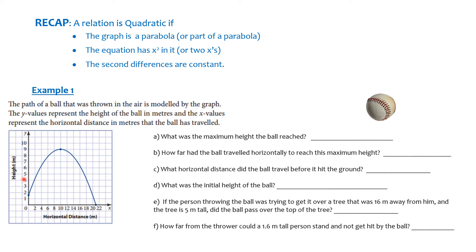What was the maximum height reached by the ball? That's the vertex. Maximum height is right there at that point. The x value is 10 at the vertex, and the y value is 9. So the maximum height reached — that's my y value, my second value — the maximum height reached is 9 meters.